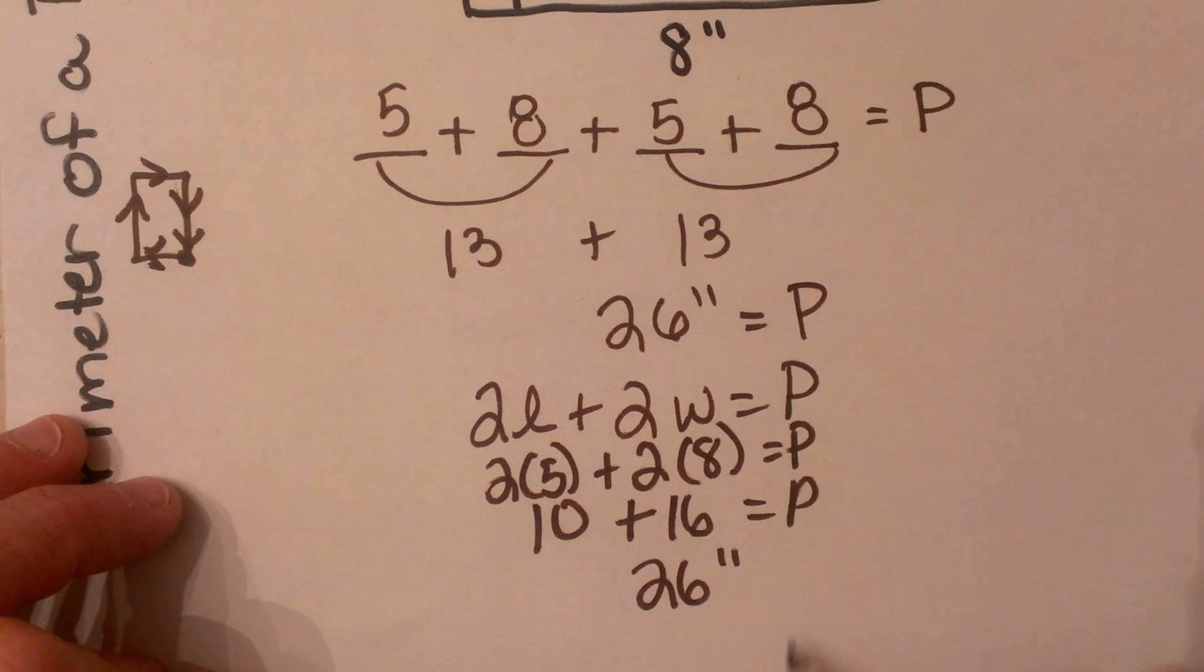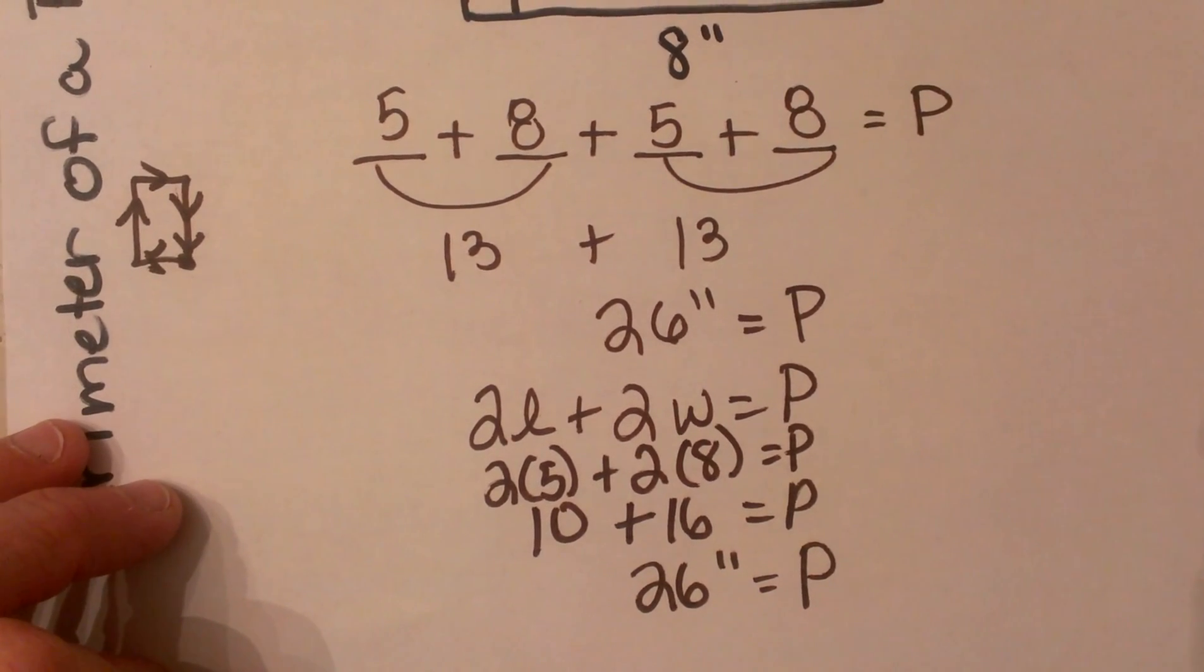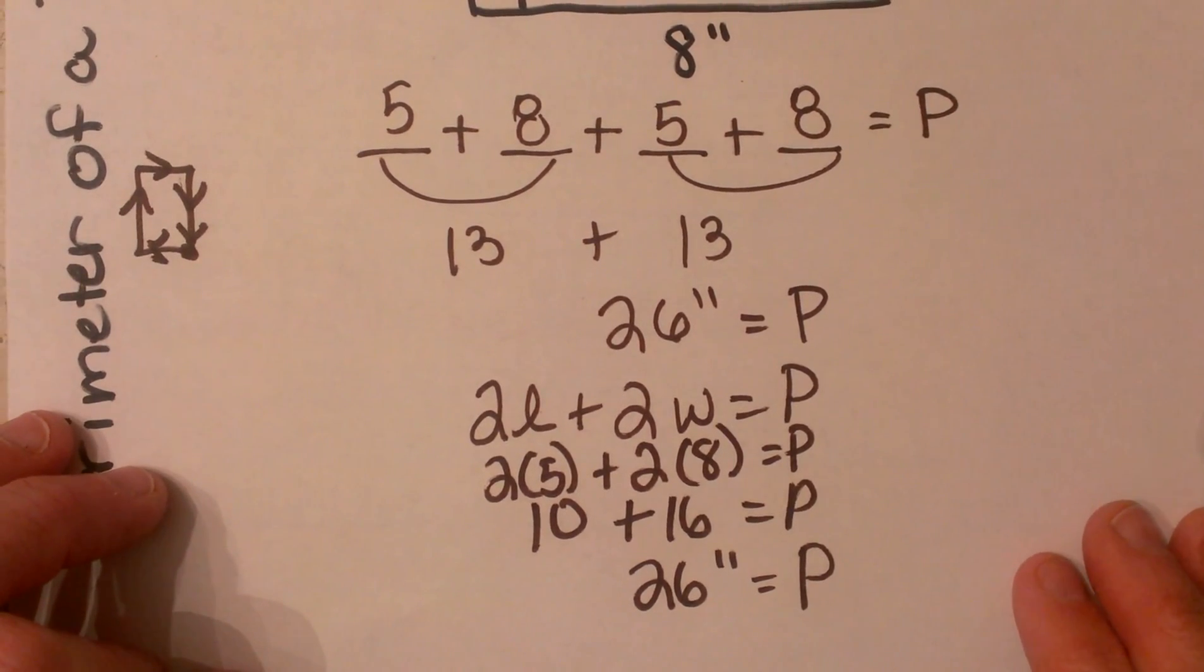Again, add your units, and that gives me the perimeter a second way. Hope this video was helpful on perimeter of a rectangle.